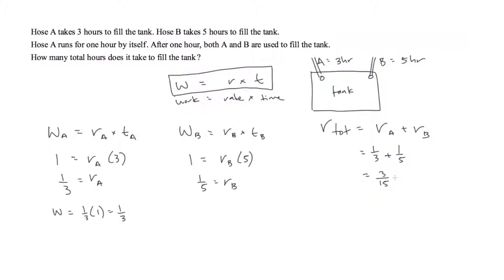That would be 5 fifteenths plus 3 fifteenths is equal to 8 fifteenths. Which means to say, at a combined rate, they work at 8 fifteenths.